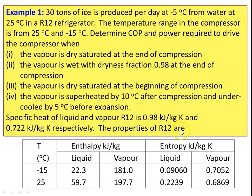The properties of R12 are given at −15°C and 25°C: liquid enthalpy, vapor enthalpy, liquid entropy, and vapor entropy — taken from refrigeration tables. If properties are not given, you must refer to the refrigeration table and take the properties of the refrigerant.